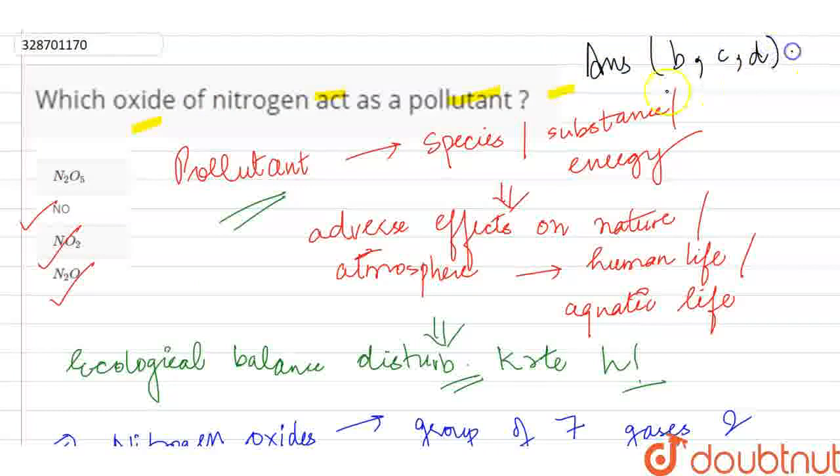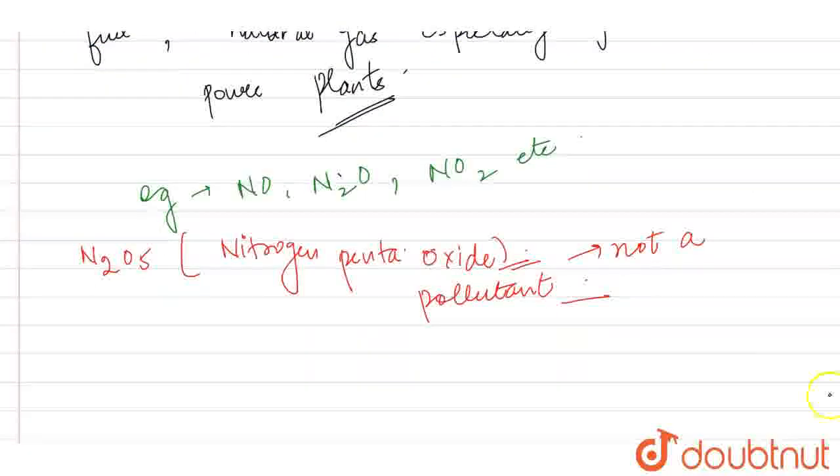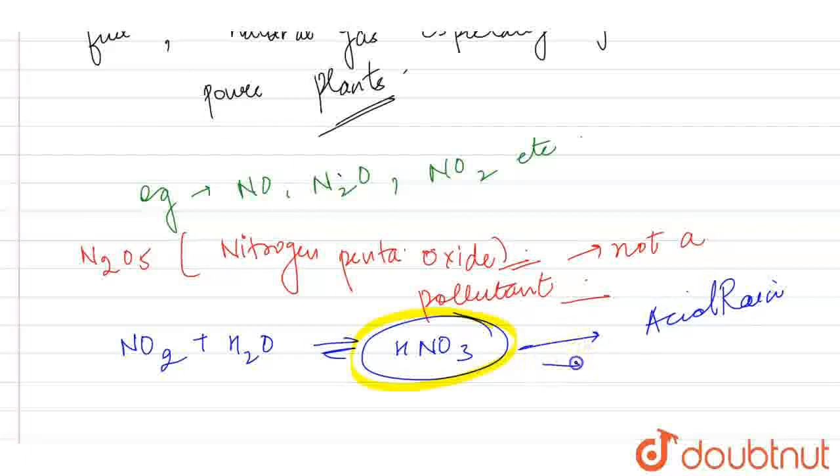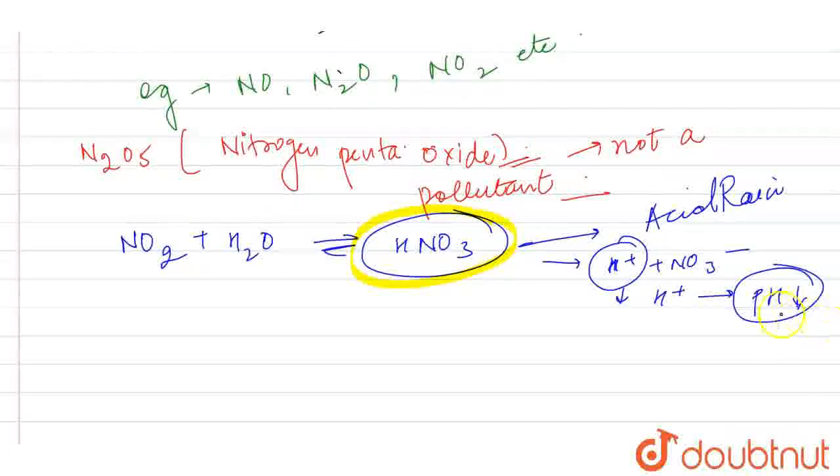Our nitrogen oxides, when they react with water vapors present in the atmosphere, form nitric acid, which is one of the major components of acid rain. If I break down this, it becomes H+ and NO3- negative. The pH concentration increases.